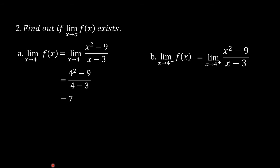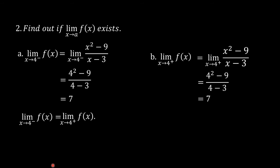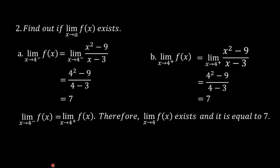The limit of f(x) as x approaches 4 from the right is equal to the limit of (x² - 9) / (x - 3) as x approaches 4 from the right, which equals (4² - 9) / (4 - 3) = 7. Therefore, the limit of f(x) as x approaches 4 exists and it is equal to 7.